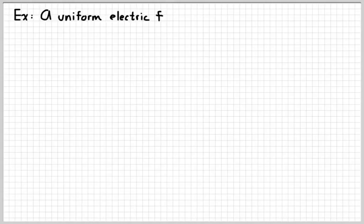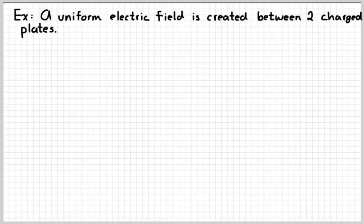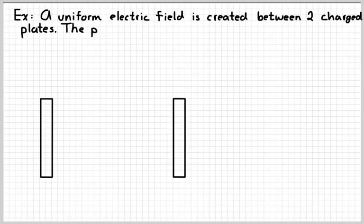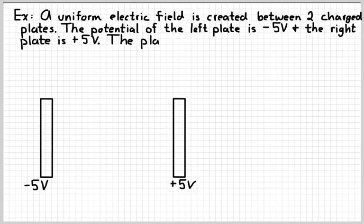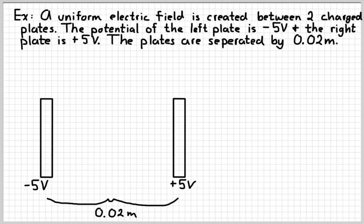Speaking of, let's look at a simple example. The way that we can create a uniform electric field is to take two charge plates and separate them, and then connect it to a battery or something else that can make them charged. So suppose we have two charge plates that look like this, and we know that the potential of the left plate is negative 5 volts, and that the potential of the right plate is positive 5 volts, like that. And then we know that they are 0.02 meters apart. So that's the distance between them.